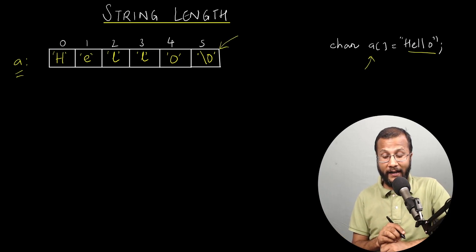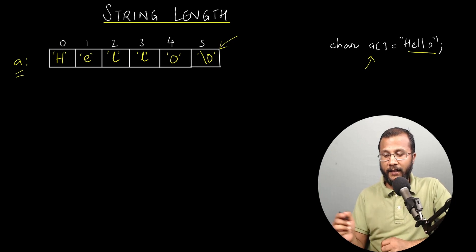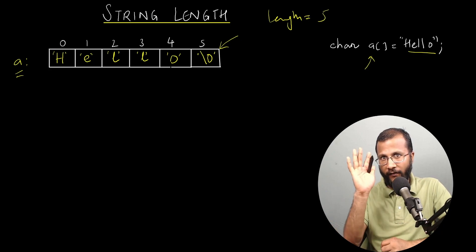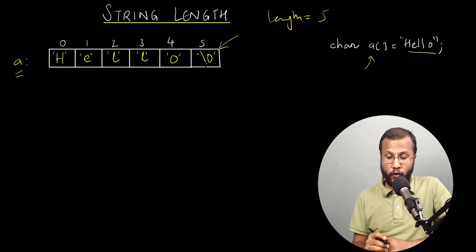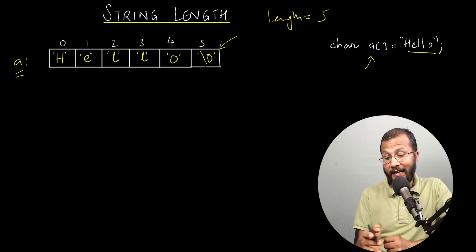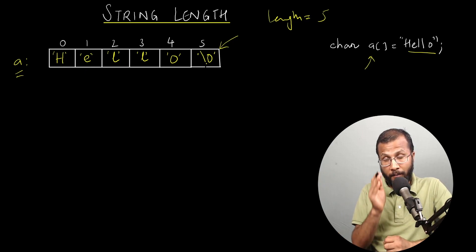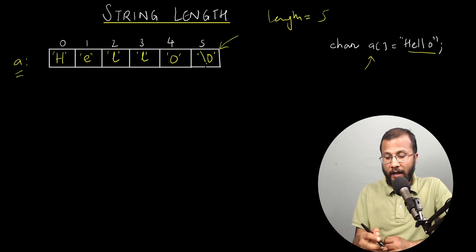Now, how would you find the length of this string? The actual length of this string is five, because there are five characters — h, e, l, l, and o. The length will not consider the null character. So to find the length, I'll have to scan this entire string until I find the null character, checking elements one by one, and stop the loop when I encounter the null character. I'll run a while loop until the null character is found.